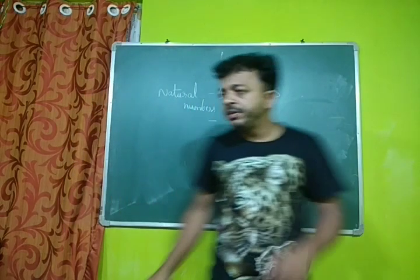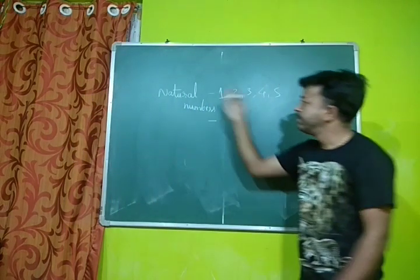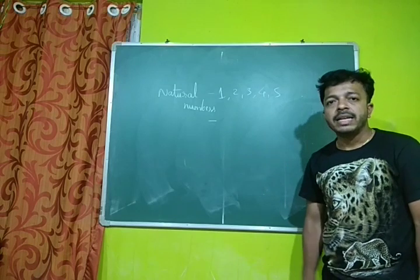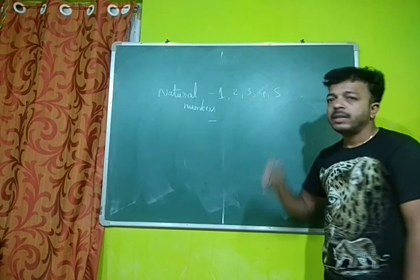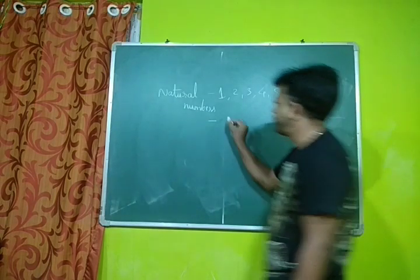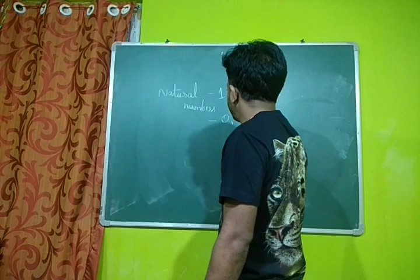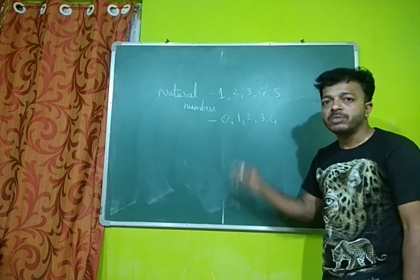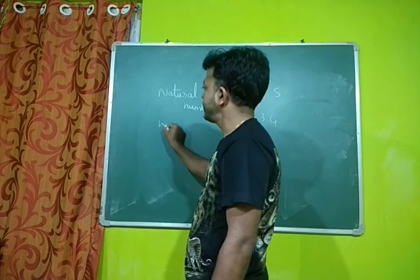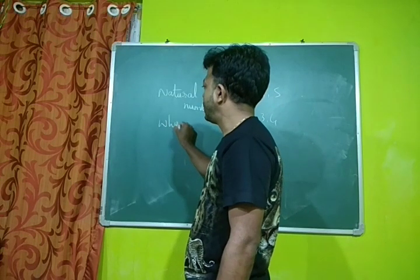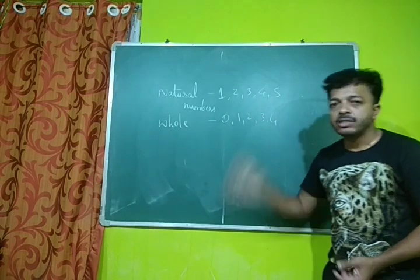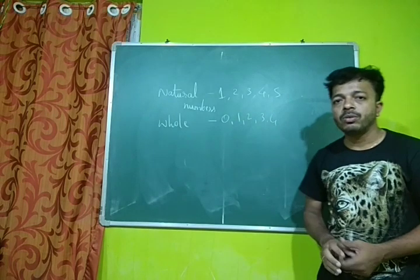Already we know that the numbers starting from 1, 2, 3, 4, 5 are the group of natural numbers. And the group of numbers starting from 0, 1, 2, 3, 4 — numbers starting from 0 — are called whole numbers. Starting from 1 is natural number, and starting from 0 is a whole number.